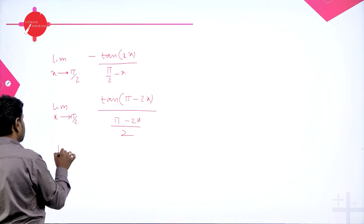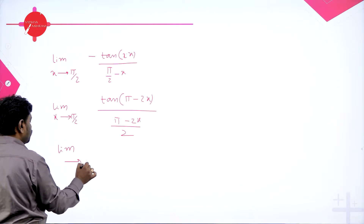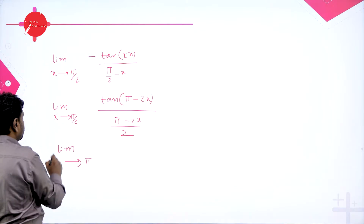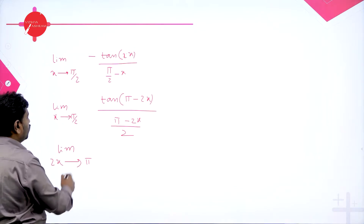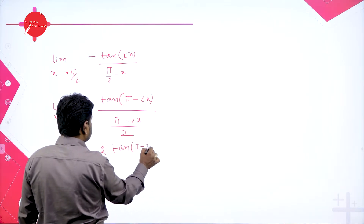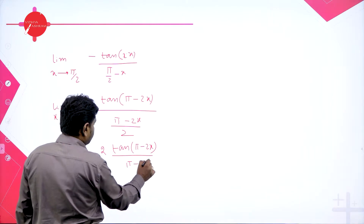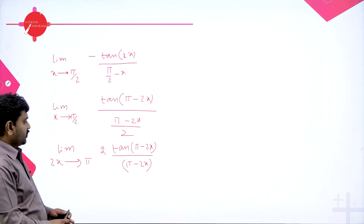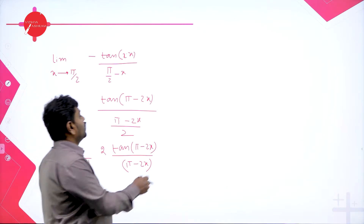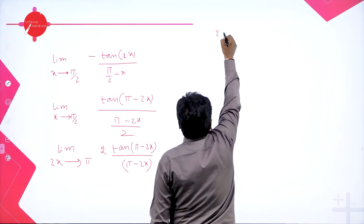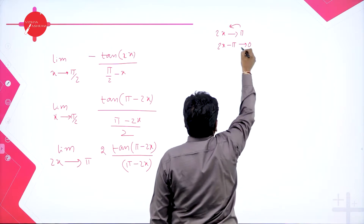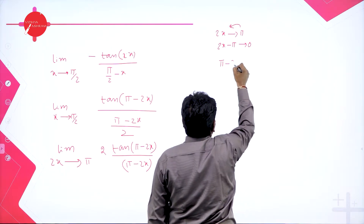The 2 from the denominator goes to the numerator. So the expression becomes tan(π − 2x) divided by (π − 2x). Now if x → π/2, multiplying both sides by 2 gives 2x → π. Bringing π to the left-hand side: 2x − π → 0, then multiplying by minus one: π − 2x → 0.